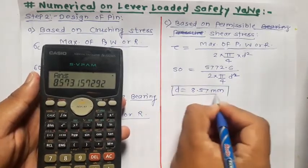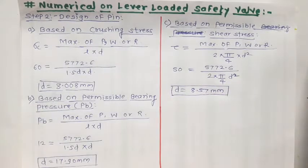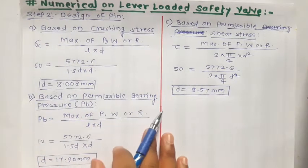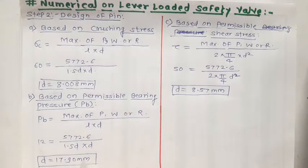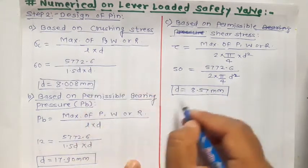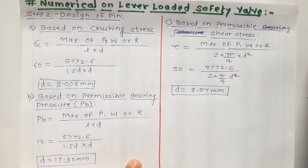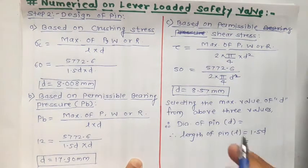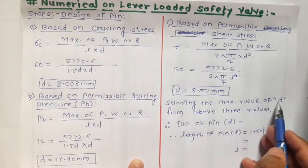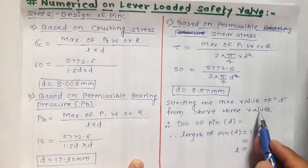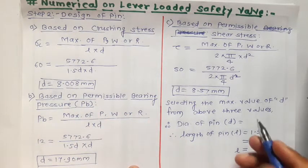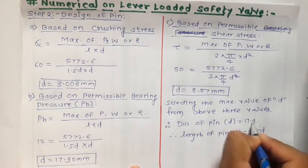We now have three values of diameter of pin: first, based on crushing stress, it is 8.008 mm; second, based on permissible bearing pressure, it is 17.90 mm; and third, based on permissible shear stress, it is 8.57 mm. Out of these three values, we select the maximum value. Therefore, selecting the maximum value of D from the above three values, the diameter of pin is 17.90 mm.